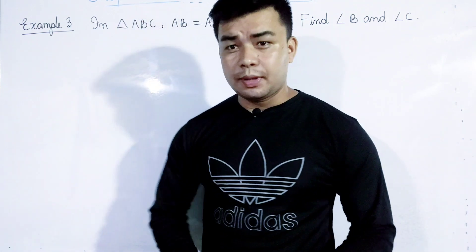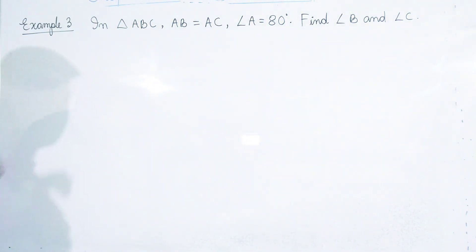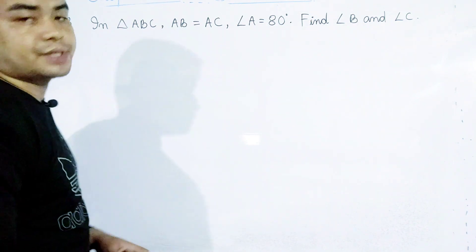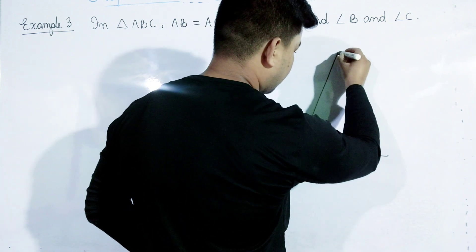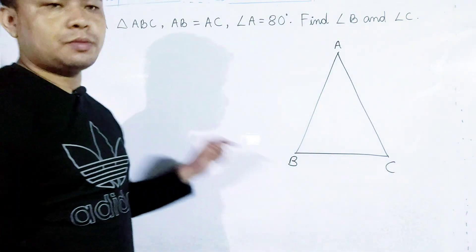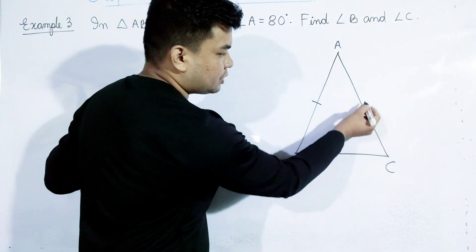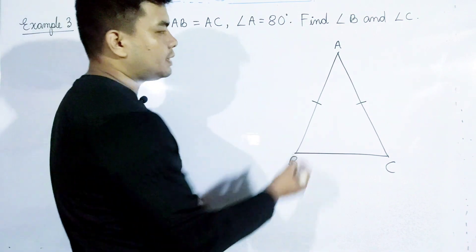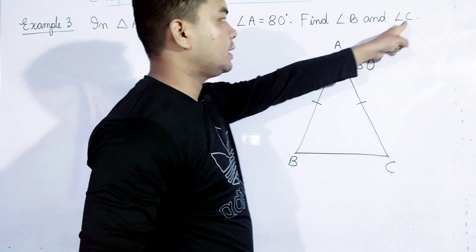Let's take a look at example number 3. Example number 3 is the triangle ABC. ABC is a triangle, and we are given certain side and angle measurements. We can add angles to this triangle — angle A, angle B, and angle C.